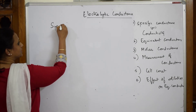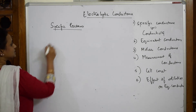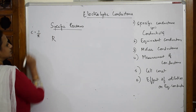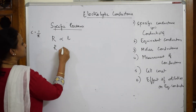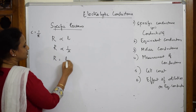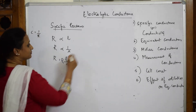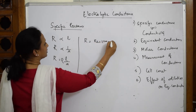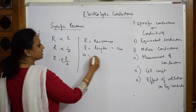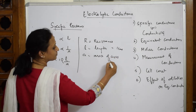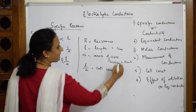Resistance R is directly proportional to length L and inversely proportional to area of cross section A, so R equals Rho times L by A. Here L is the length, equal to 1 centimeter, and A is the area of cross section, equal to 1 centimeter square. The ratio L by A is called the cell constant.